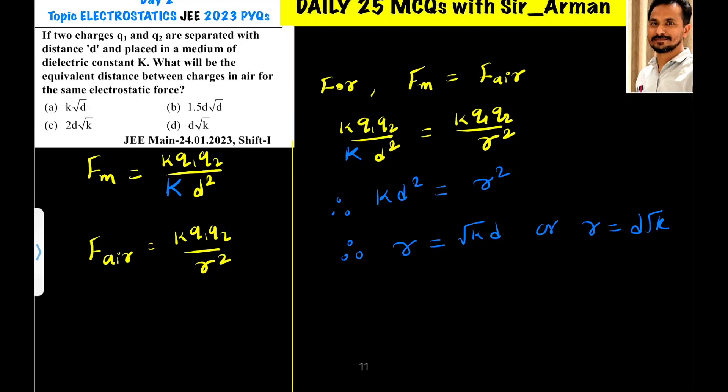If two charges Q1 and Q2 are separated with distance d and placed in a medium of dielectric constant k, what will be the equivalent distance between the charges in air for the same electrostatic force?